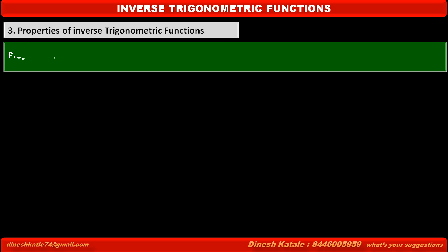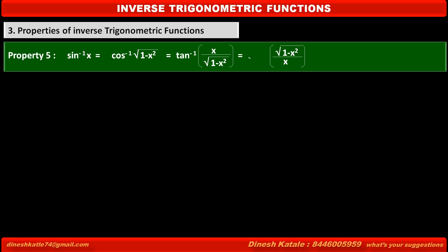Now, we have to prove property number 4. Sin inverse x is equal to cos inverse of under root 1 minus x square, which is equal to tan inverse of x upon under root 1 minus x square, which is equal to cot inverse of under root 1 minus x square upon x, which is equal to sec inverse of 1 upon under root 1 minus x square, which is equal to cosec inverse of 1 upon x.